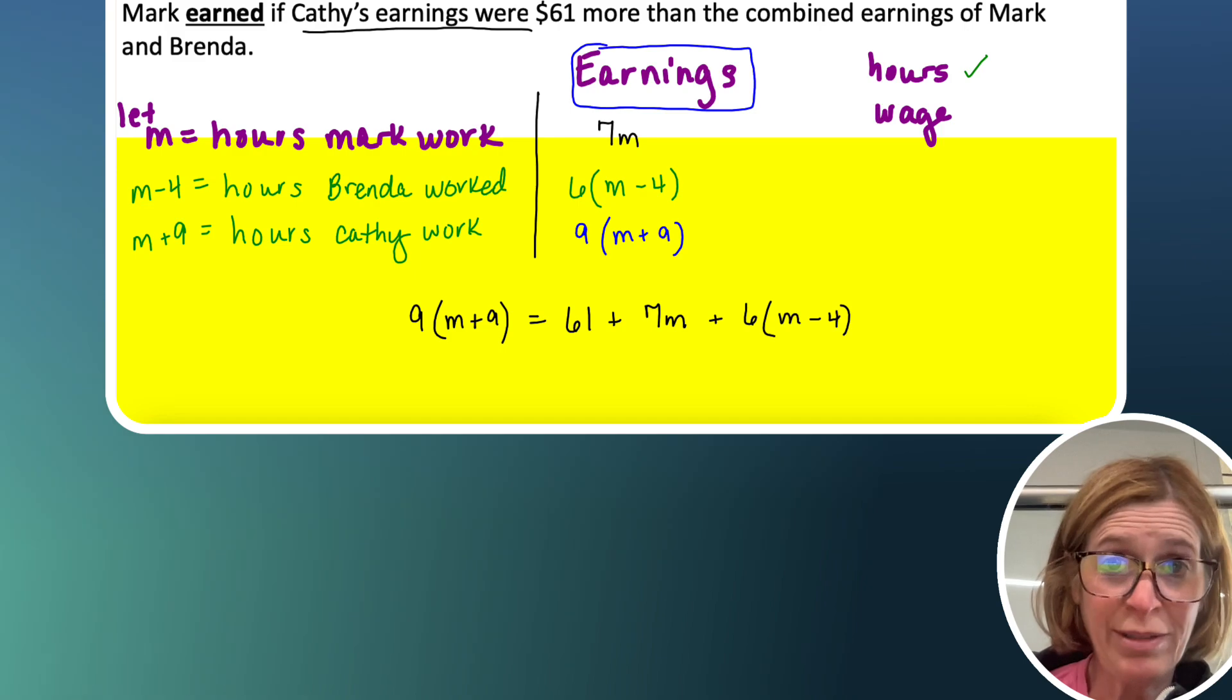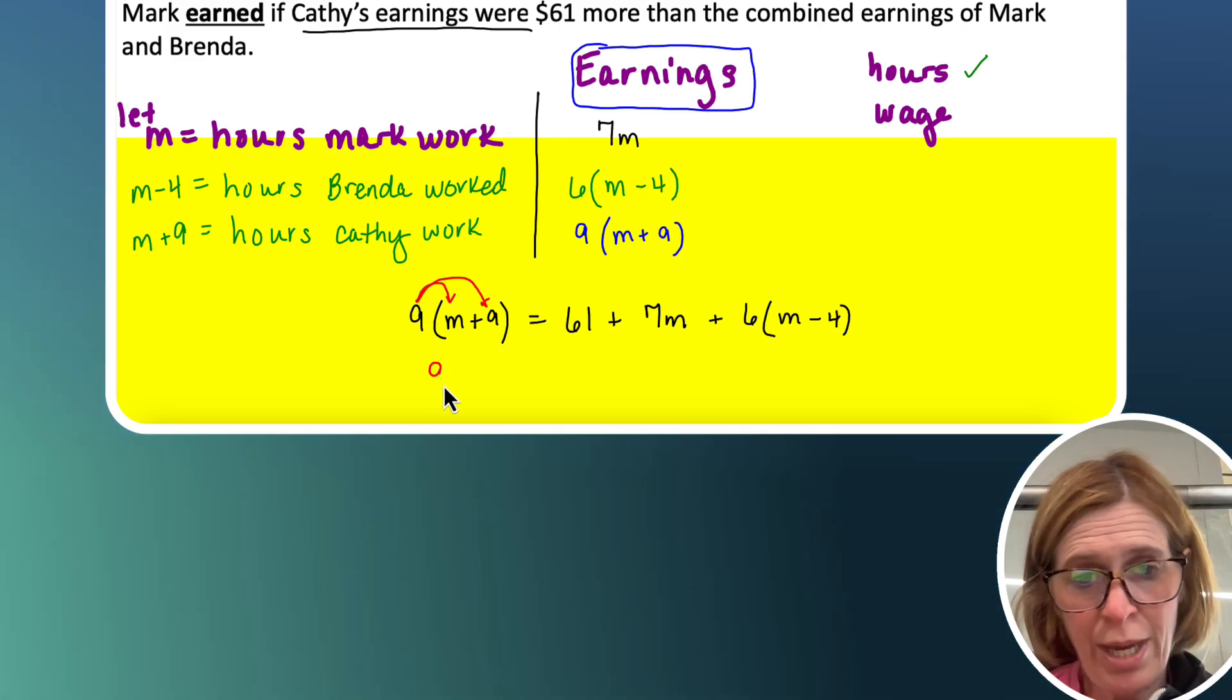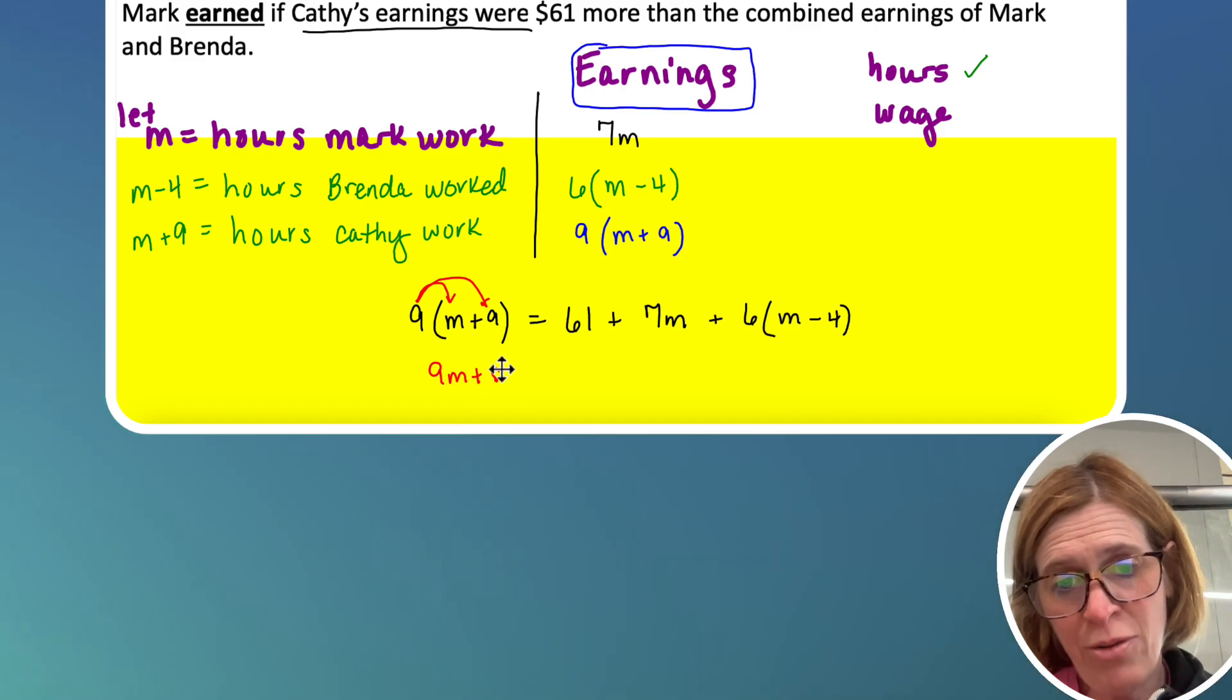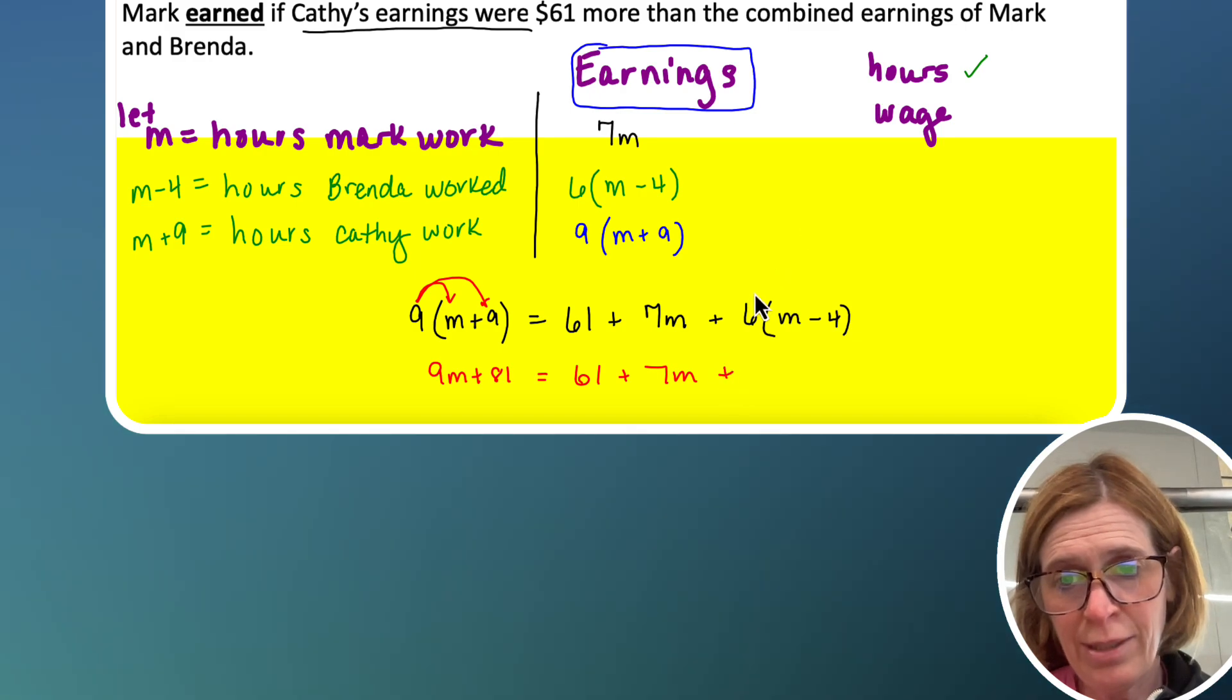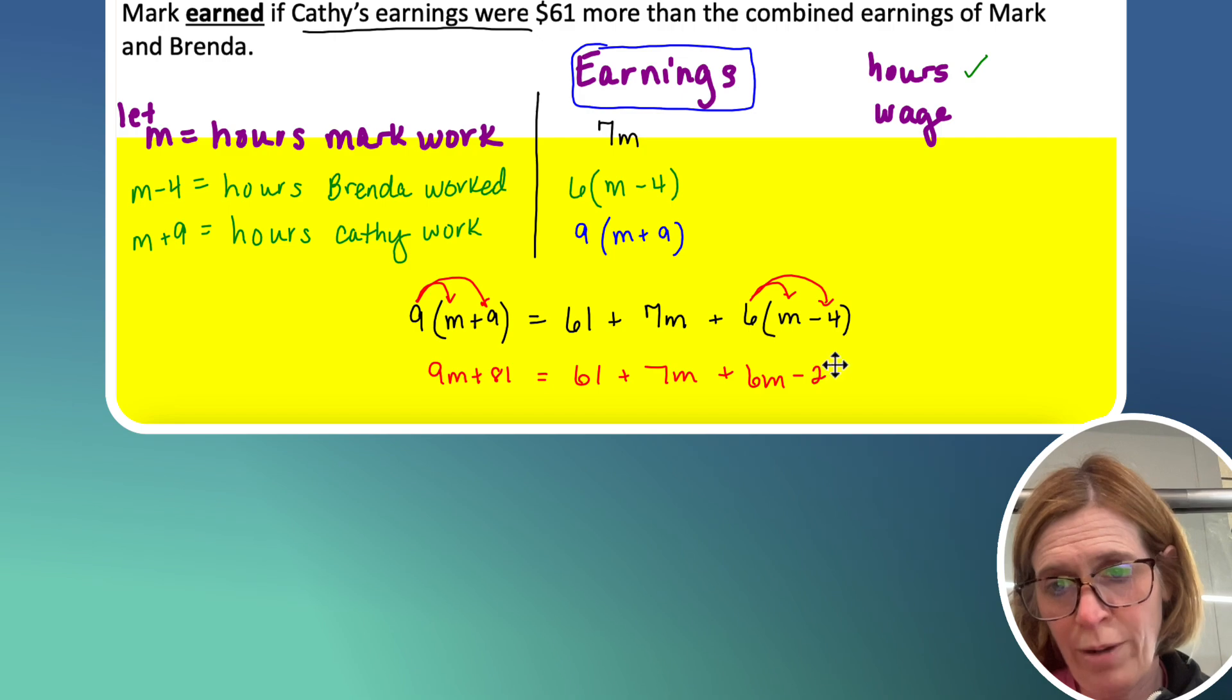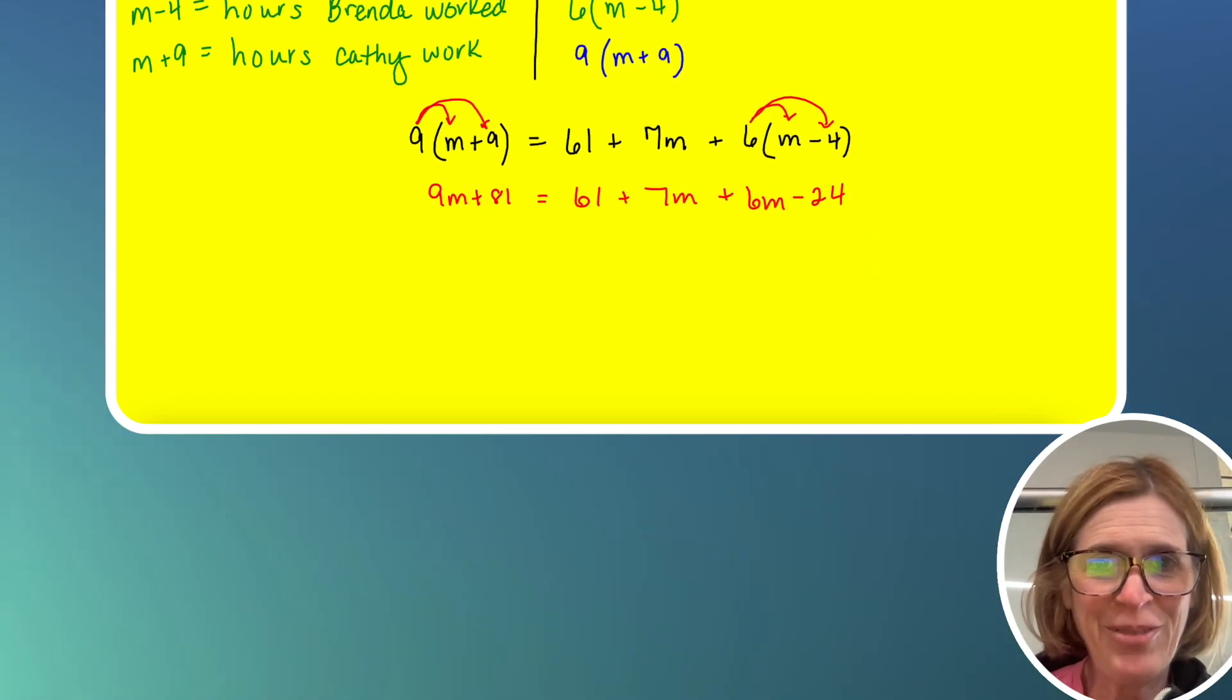Alright, so now we've got to do the algebra. Now we've got to do the math. So we have to distribute or multiply our nine, so 9M plus 81 equals 61 plus 7M plus 6M minus 24. Alright, so we're getting there, right? We've got some work to do here.